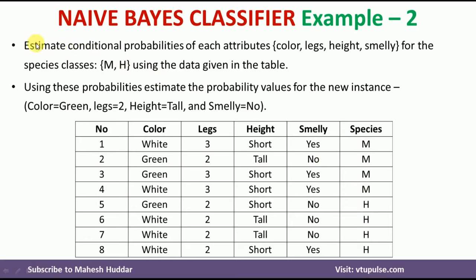First, we need to estimate the conditional probabilities of each attribute for the given species classes M and H. Using these probabilities, we need to estimate the probability values for the new instance: color is green, legs is 2, height is tall, and smelly is no. So first we calculate the conditional probabilities as well as the prior probability to come up with the probability of the new instance.